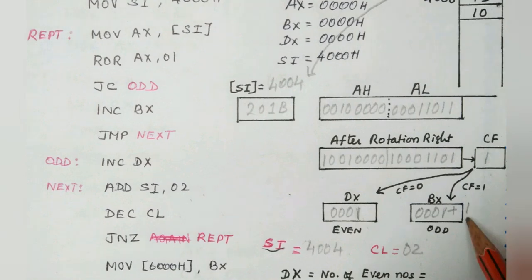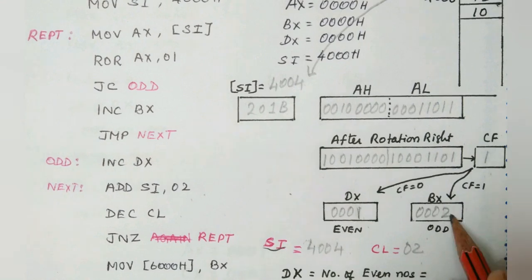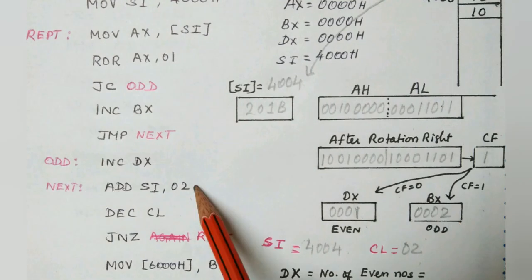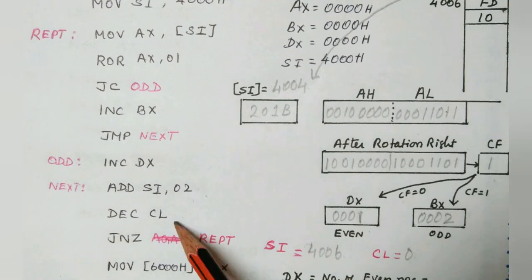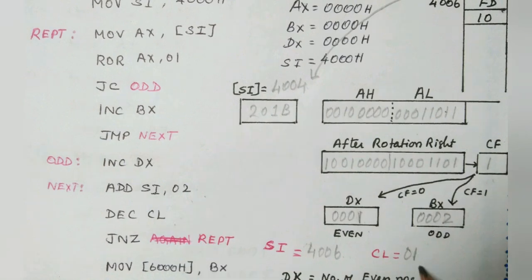Now already BX is 1. Now I am going to add one more. Now it becomes 2. After finishing this iteration, again I am incrementing the SI register by 2 so that the location can be 4006. And the CL is now decremented by 1.